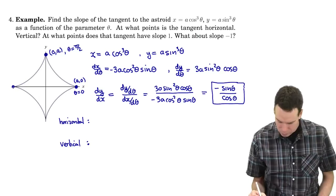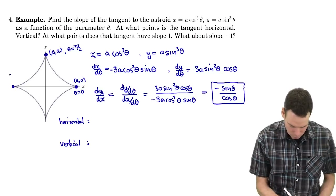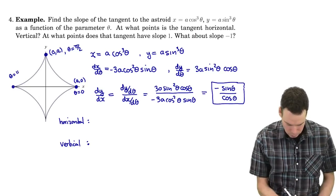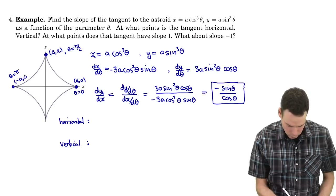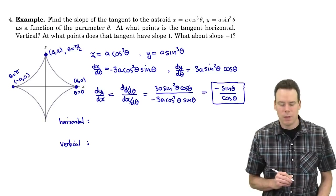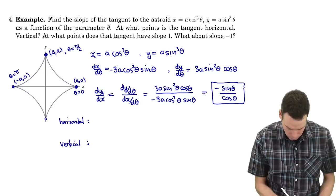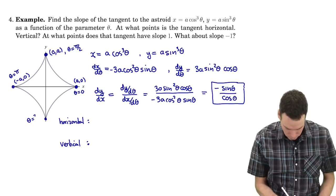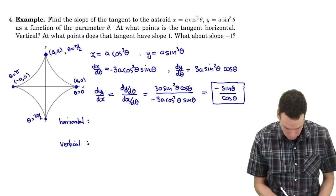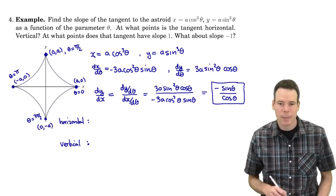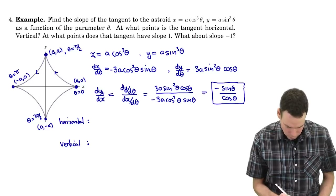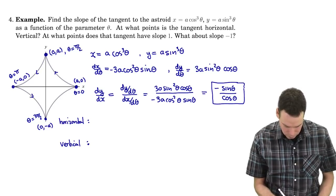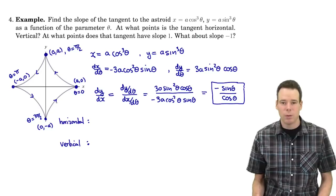By similar analogy we can keep going. As theta increases we can see that the asteroid is being traced out in this way, getting various other points along the way.